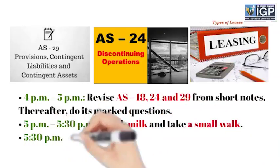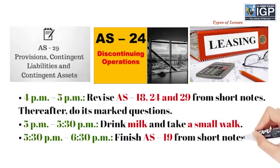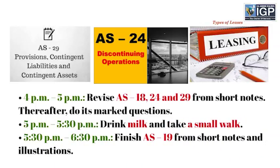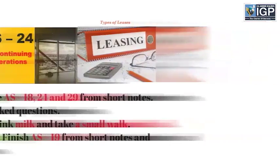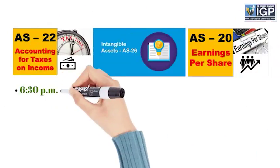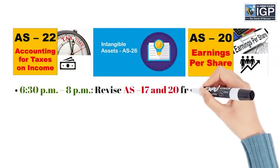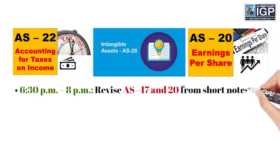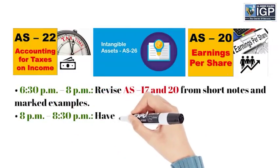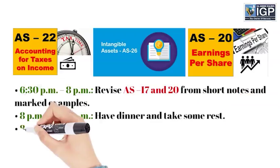From 5:30pm to 6:30pm, finish AS 19 from short notes and illustrations. From 6:30pm to 8pm, revise AS 17 and 20 from short notes and marked examples. From 8pm to 8:30pm, have dinner and take some rest.